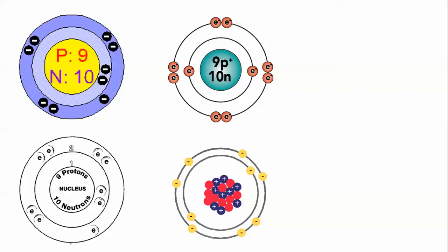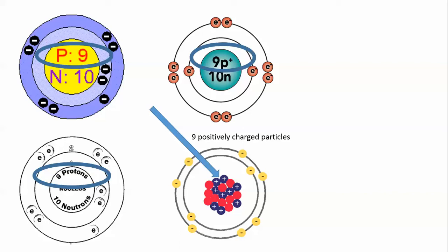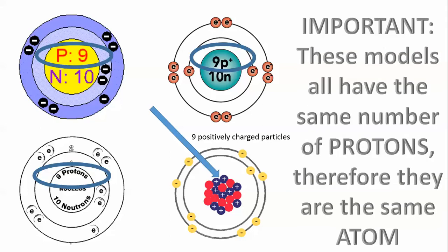While there may be several things you noticed, check this out. All four of the atoms have the exact same amount of protons. What? That's crazy. Here are the facts. All atoms with the same number of protons are, in fact, the same atom. So, since these models have the same number of protons, nine, they are all representative of the same atom.